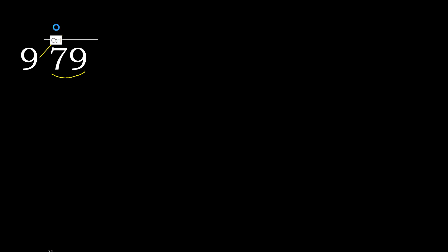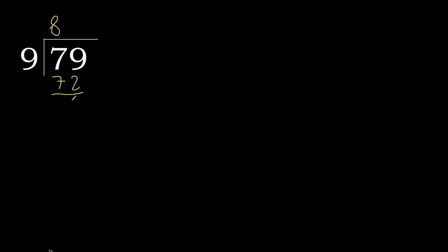9 multiplied by 9 is greater. Multiply by 8 — 72 is not greater. Ok, subtract. Remainder is 7. There is no next number, therefore complete — always complete with 0.